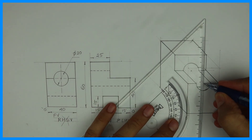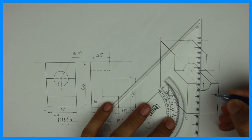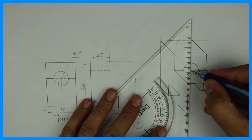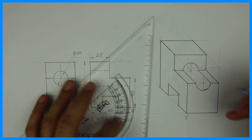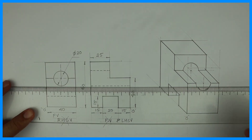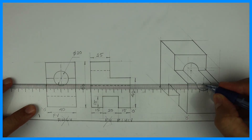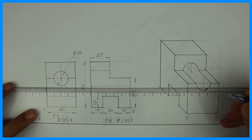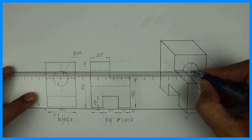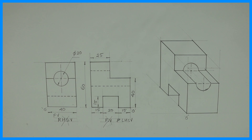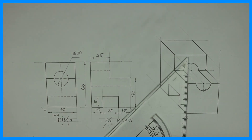Now we are done with this sum. Wherever we have a circle we can draw the axis line. Then we can do the dimensioning.